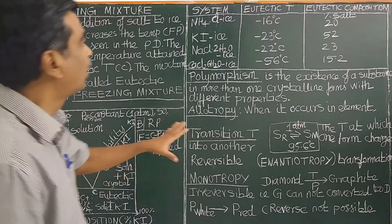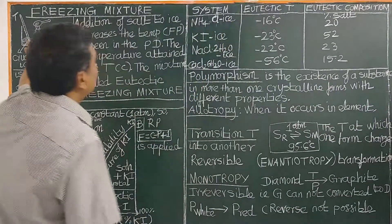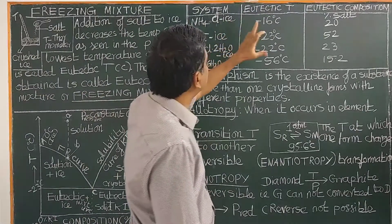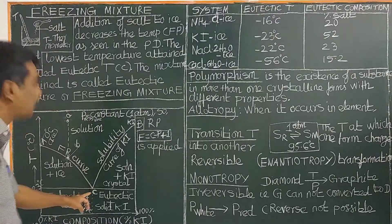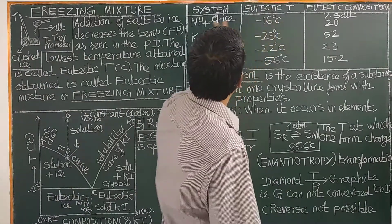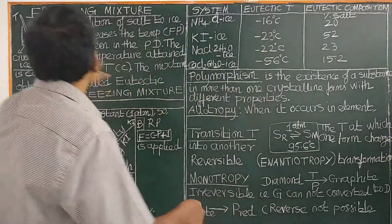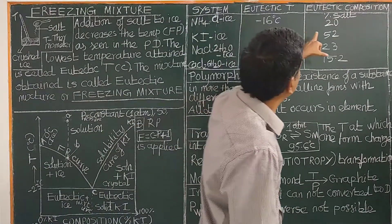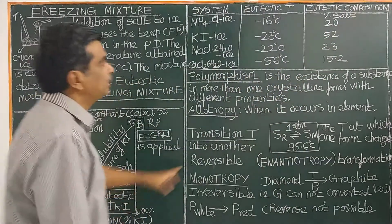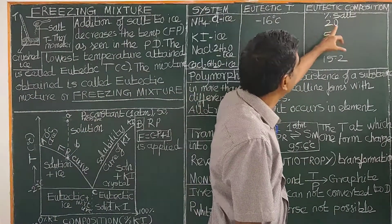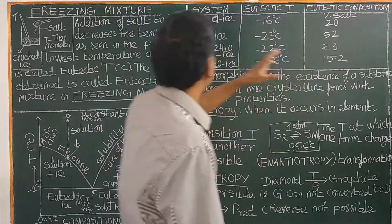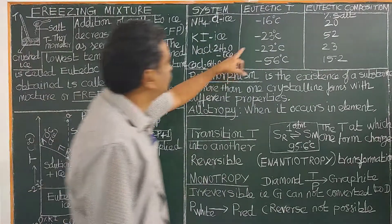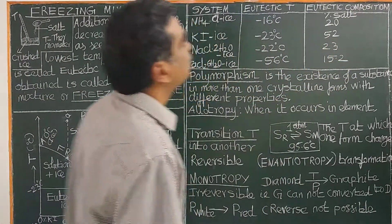The phase diagram of salt ice is very important. The lowest temperature for the ammonium chloride ice system is minus 16 degrees Celsius, with an effective composition of 20%. For ammonium chloride water, the eutectic temperature is minus 23 degrees Celsius, with effective composition 52% KI.